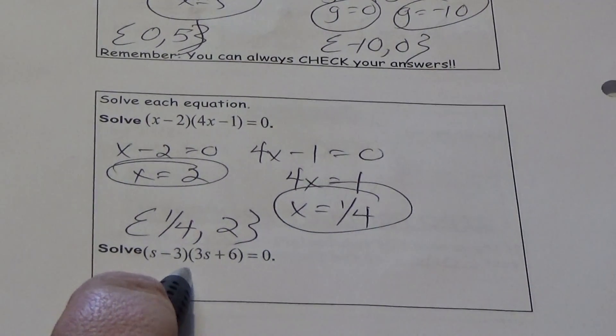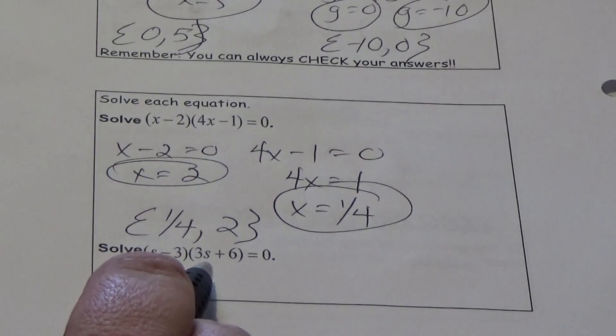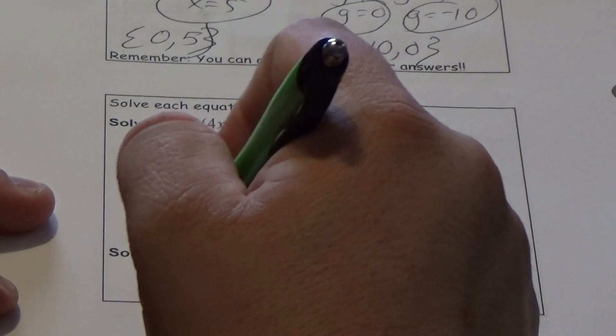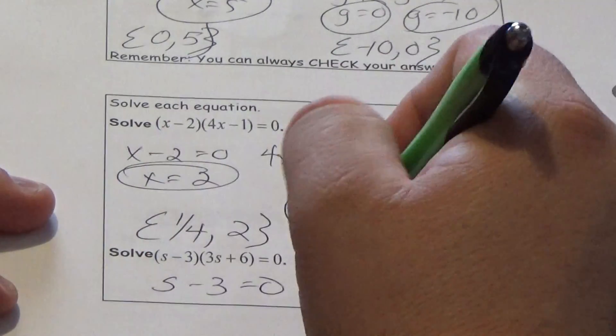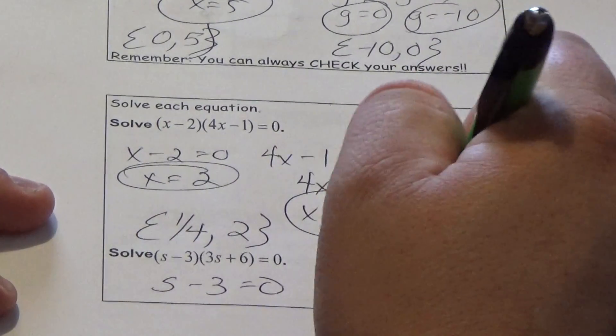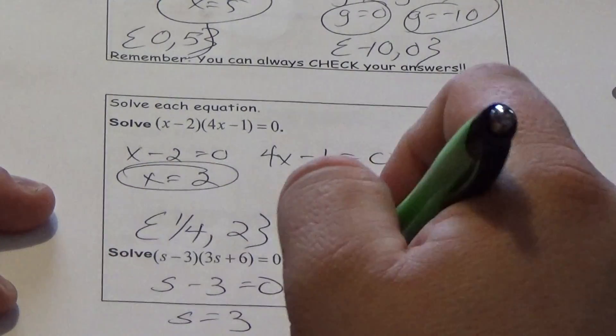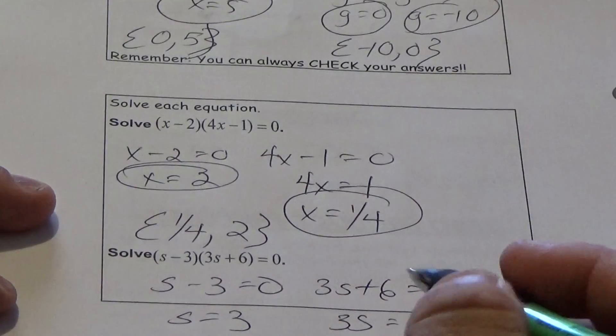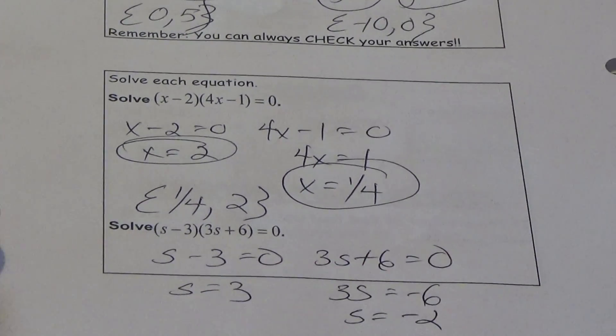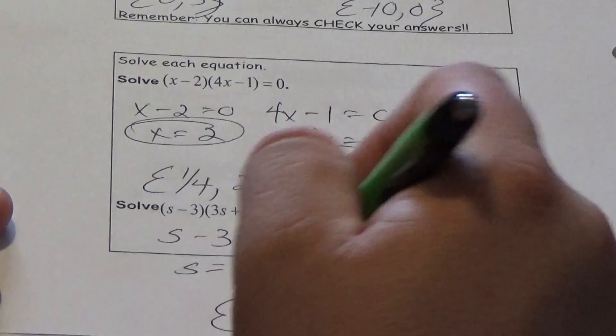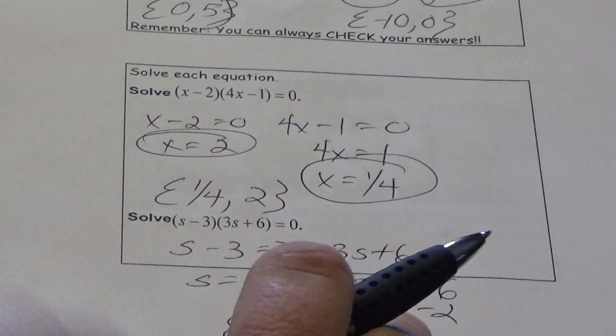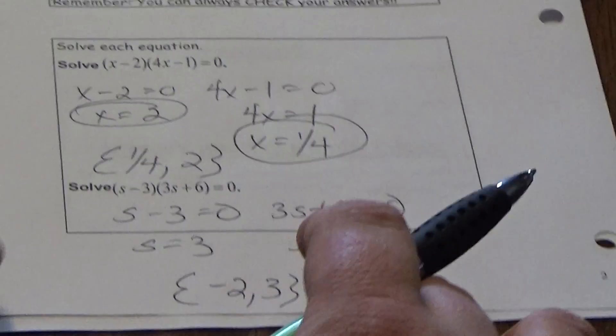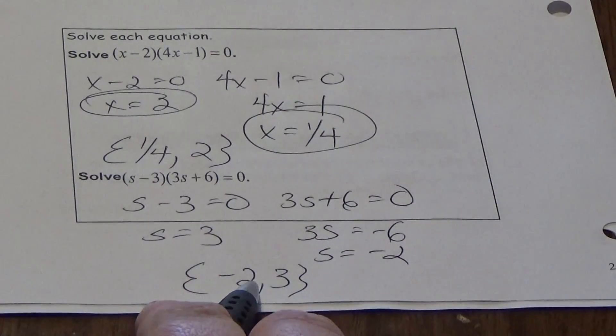Go ahead and give this one a shot. Pause the video and when you're done, check your answer with my work. Okay, so we get {-2, 3} is the answer to the bottom one.